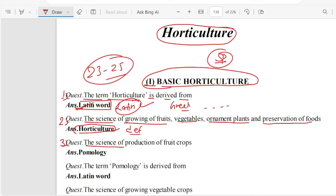Question 3. The science of production of fruit crops. This is Pomology.